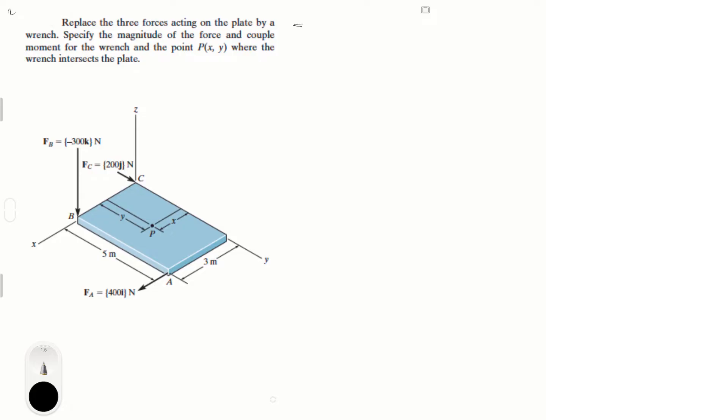First step is always find the sum of the forces, which is very easy to find. It's 400 in the i plus 200 in the j minus 300 in the k. You simply get it by adding, sum of the forces equals F_A plus F_B plus F_C. There's nothing hard here.